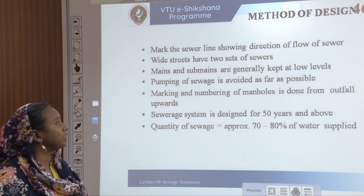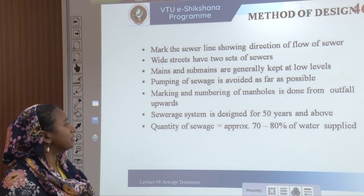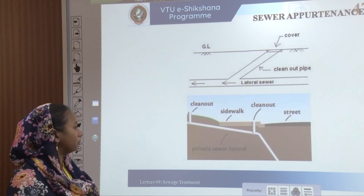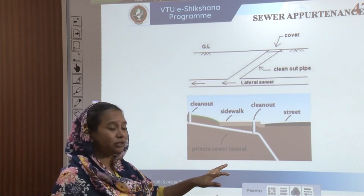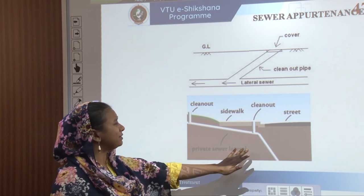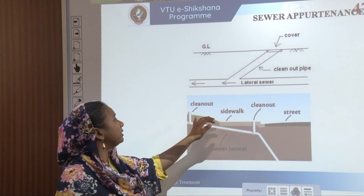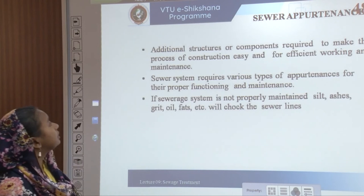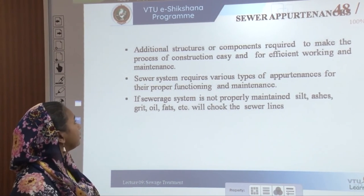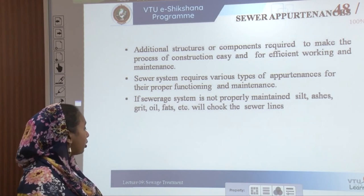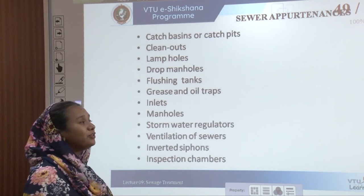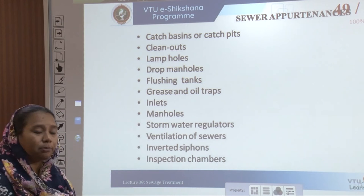Marking and numbering of all manholes should be done from the outfall upwards. Sewerage systems should be designed for at least 50 years. The quantity of sewage should be approximately 70 to 80 percent of the water that is supplied. Right from laterals to sidewalks, venting and clean outs at different levels must be considered. Additional appurtenances are required for easy construction and efficient maintenance, as proper removal of silt, ash, grit, oil, and fats is necessary to prevent choking.